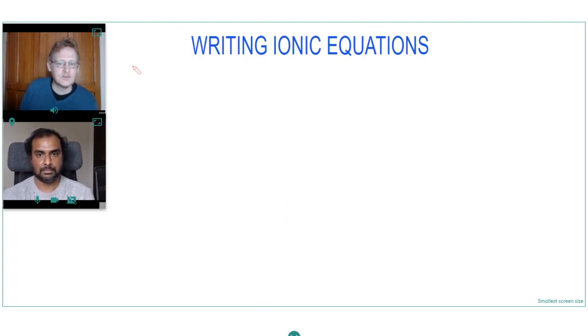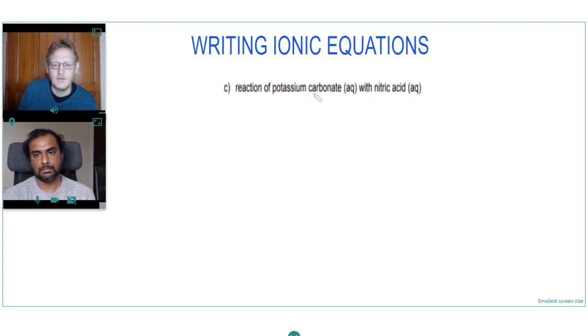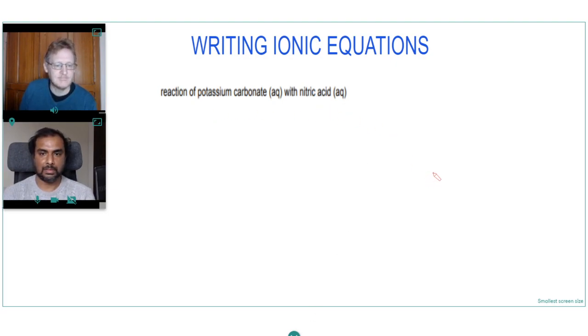So now I'll choose some questions for us to have a go at writing ionic equations. So I'll just go and cut and paste onto the board. Okay. Here's a question. To write an ionic equation for the reaction of potassium carbonate, aqueous potassium carbonate with aqueous nitric acid. That's really cool that you got a, presumably this is like on a PDF or some sort of exam question and you just put it there on this canvas.